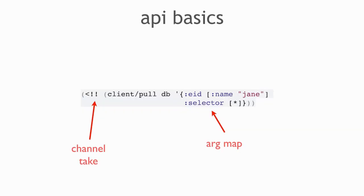The basics are stuff you've seen already. You call client, some operation, the input. The argument collection is almost always a map — a set of keys that might be extended in the future pointing to other things. Then you do a blocking channel take, though you could be in a go loop or get things off the channel some other way. We're sticking with that just to keep things simple today.